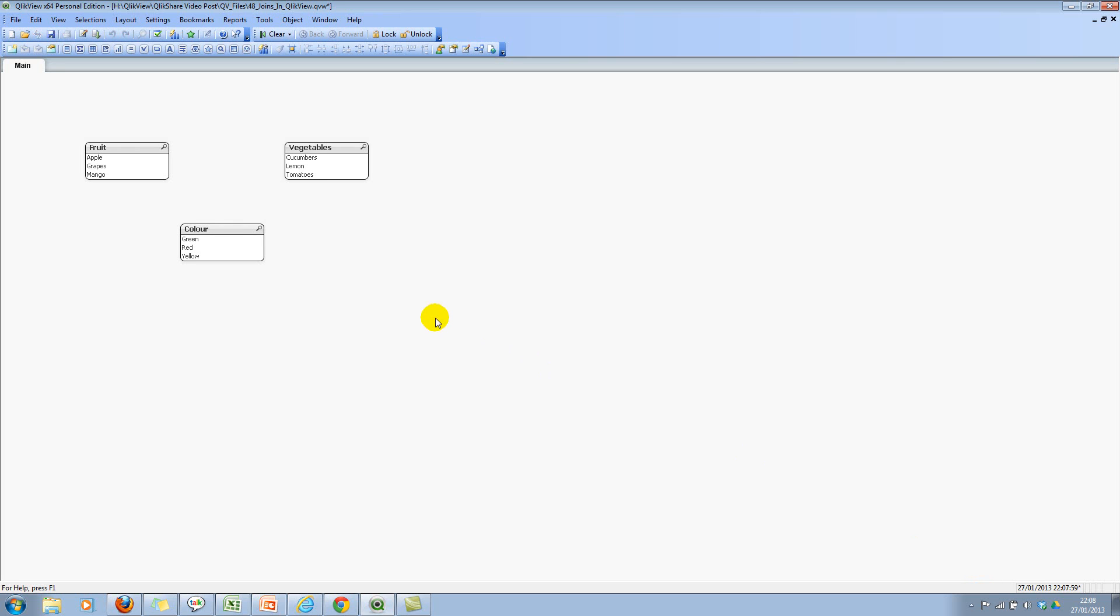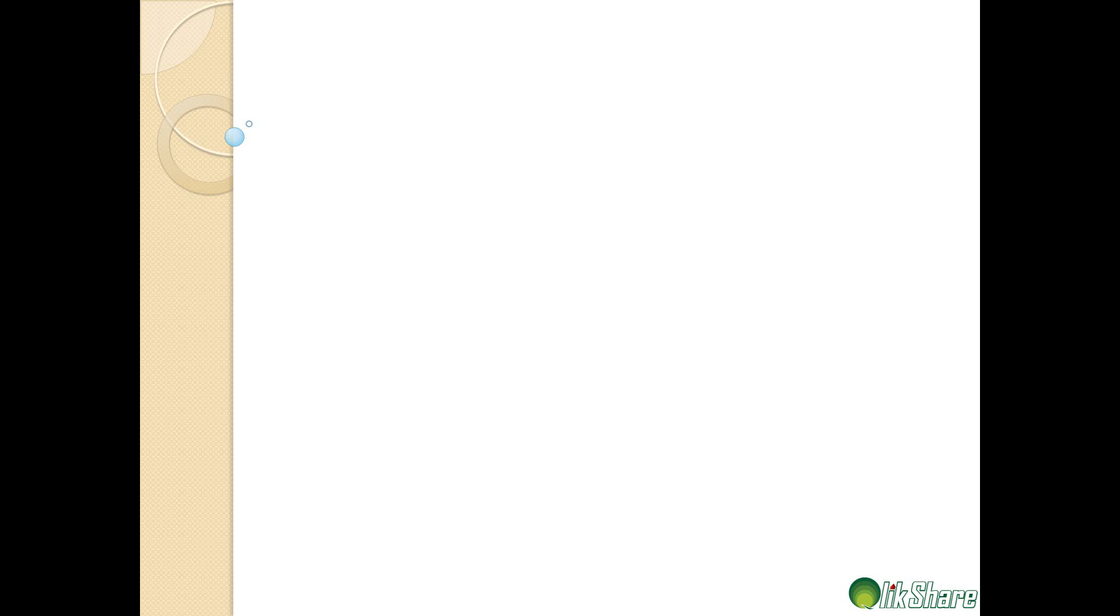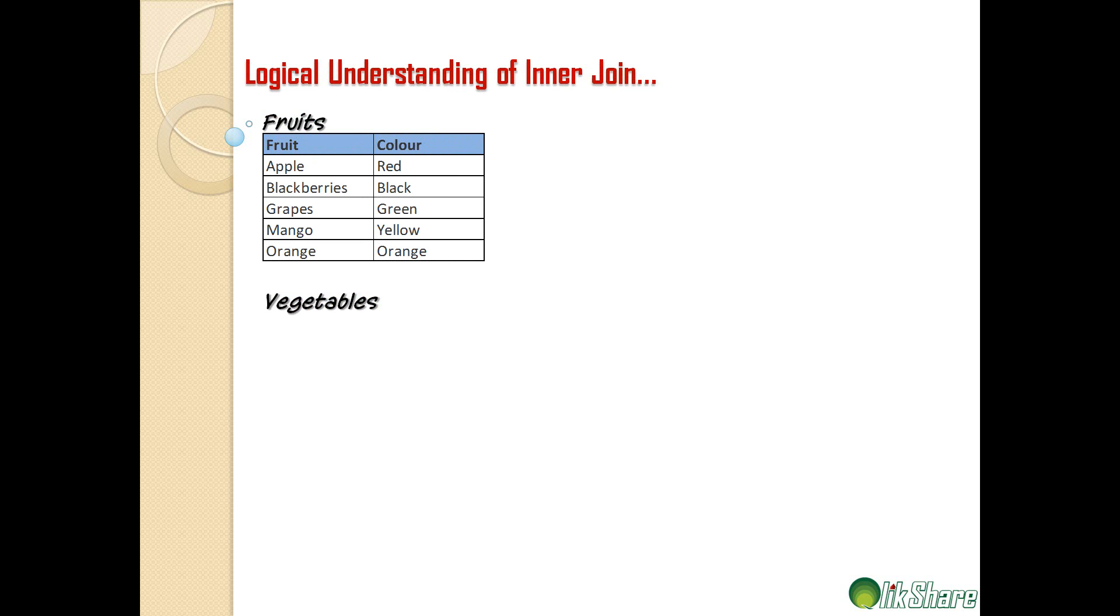Let's look at the logical processing to understand how this join is performed. I'll go back to PowerPoint. The next step is look at the logical understanding of inner join. We have fruits with fruit and the color, and we have vegetables and the color.